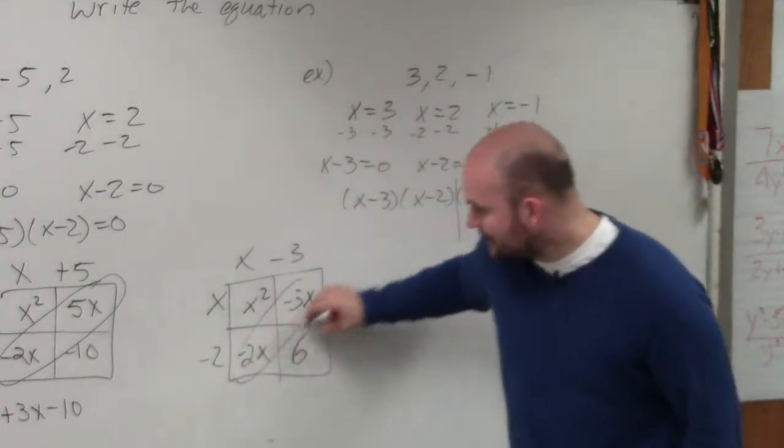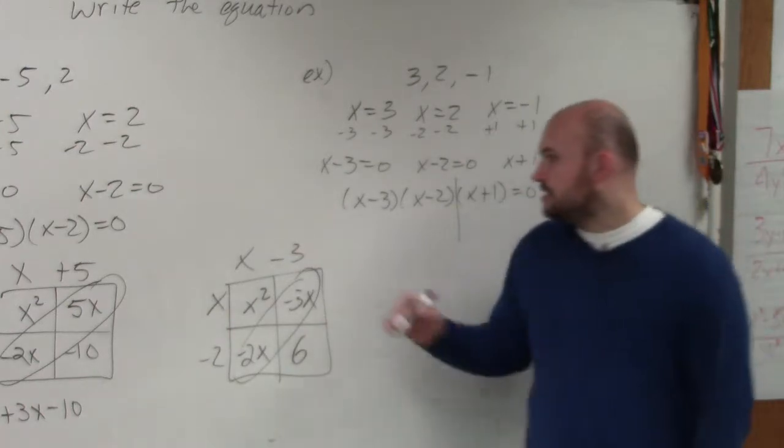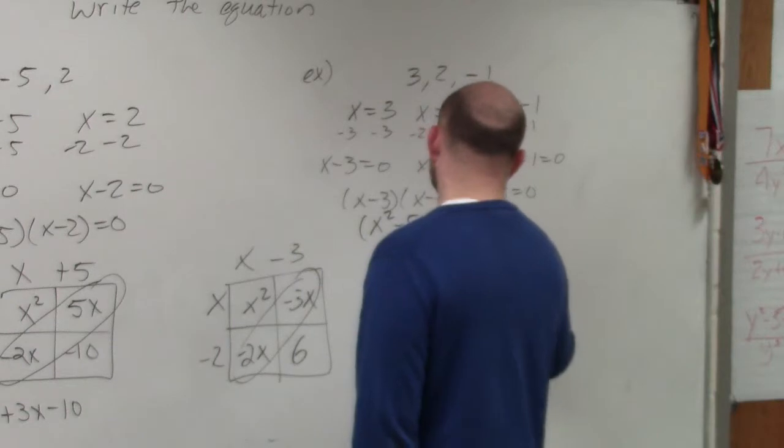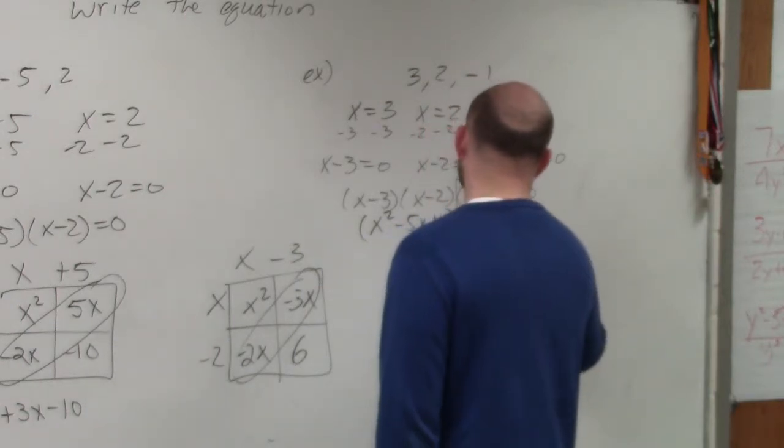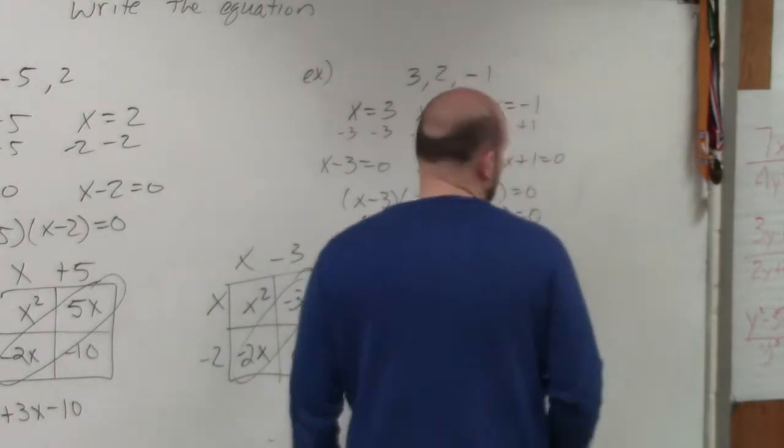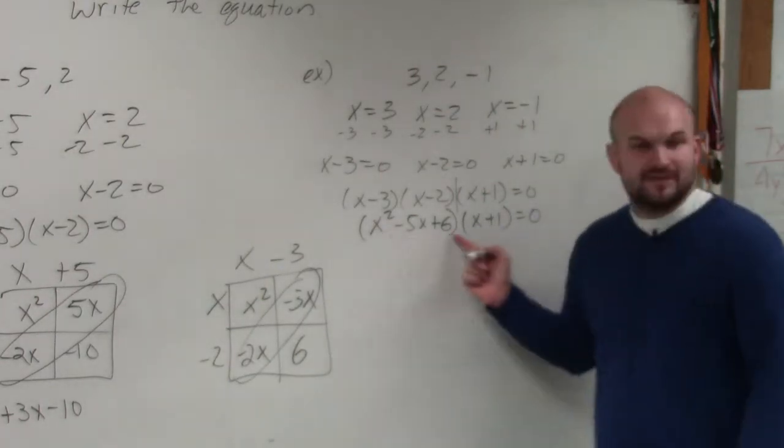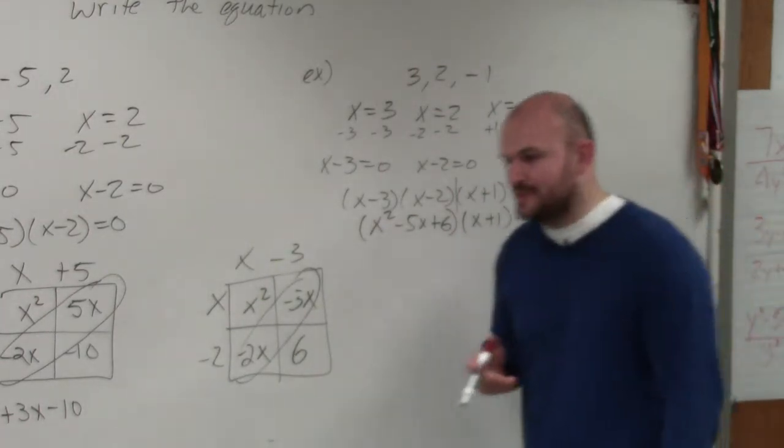Again, my diagonals are like terms. So therefore, I get x squared minus 5x plus 6 times x plus 1 equals 0. So hopefully, everybody got to that polynomial. And as I walked around, I saw a lot of students that have this correct, which is good. So that makes me happy.